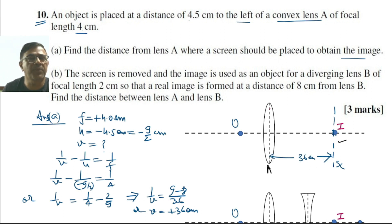In the second part of the problem, the screen has been removed and the image acts as an object for a diverging lens B. The focal length of this diverging lens equals 2 centimeters. The position of this diverging lens is such that the final image is at a distance of 8 centimeters from lens B itself. We are supposed to find the distance between lens A and lens B.